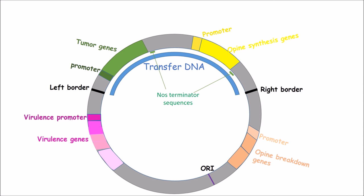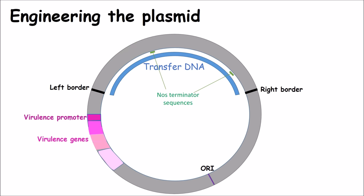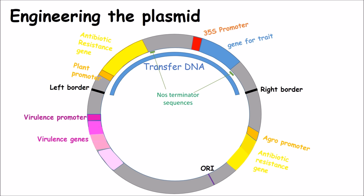To use this plasmid to make transgenic plants, the sections that are harmful to the plant are removed, and the genes to be transferred into the plants are added. The opine synthesis and breakdown genes are removed, as well as the tumor-inducing genes. The gene for the trait, as well as the plant promoter, is added in its place. Most of the time, a very strong promoter, such as the 35S cauliflower mosaic virus promoter, is used to ensure that production of the desired gene is high. A second selectable marker is introduced with a bacterial promoter to allow for selection of agrobacterium that contain the Ti plasmid. The virulence genes remain, as they are necessary to transfer the T-DNA from the agrobacterium into the plant.